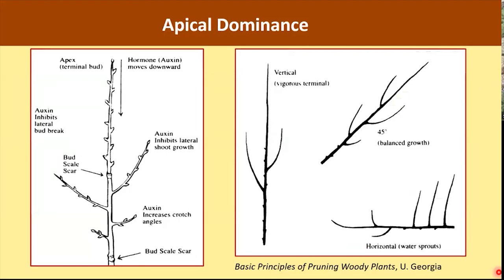Let's begin with the concept of apical dominance — the principle behind how plants respond to pruning. It begins with auxin, which is present in very high concentrations near the tip of a bud. Auxin's job is to prevent buds below from developing. Auxin moves by gravity, so in a vertical branch the effect is strongest, at an angle the effect is moderate, and in a horizontal branch the effect is almost non-existent.